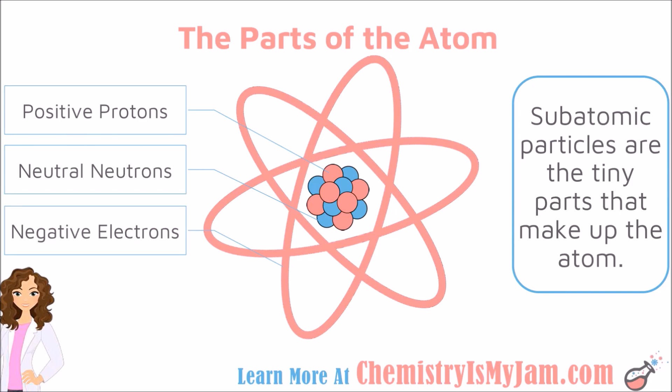Around the outside of that nucleus, you have electrons. In the space outside the nucleus, you have negative electrons moving around the nucleus. All of these things are called subatomic particles, and they are the tiny little particles that make up the atom.